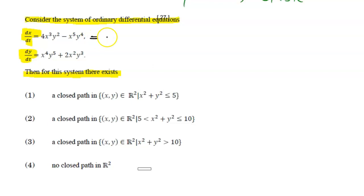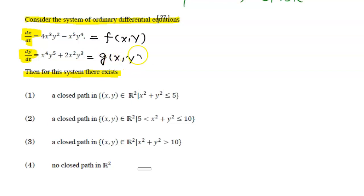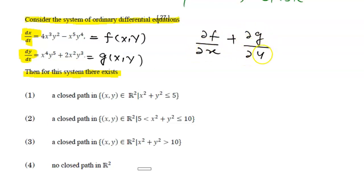We treat dx/dt as f, a function of x and y, and dy/dt as g, a function of x and y. Now if ∂f/∂x plus ∂g/∂y is greater than or equal to zero, then in that case we can say there is no closed path in ℝ².